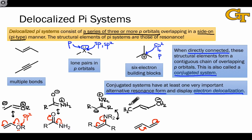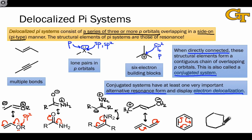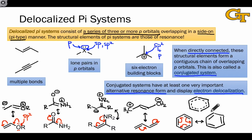This resonance structure shows the delocalization well. Of course, we could have also pushed electrons in the opposite direction to generate another alternative resonance form of this molecule. It's also worth mentioning benzene. Benzene is a cyclic pi system in which we can generate a resonance structure just by shifting double bonds around. The resulting resonance structure is equivalent to what we started with — we just shifted the positions of the double bonds. What this shows us is that in benzene, all six of the pi electrons are delocalized over all six carbons.